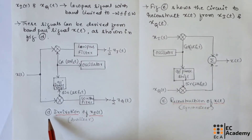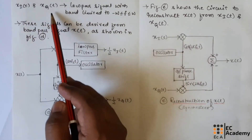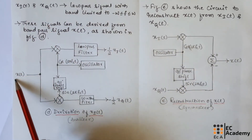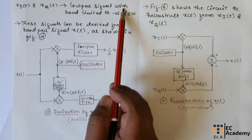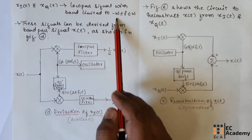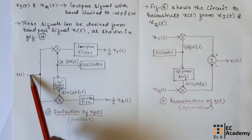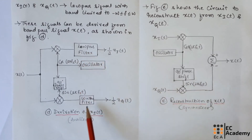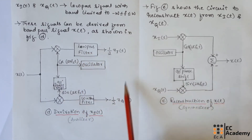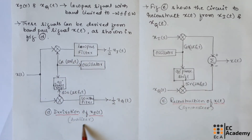Figure D shows how we can obtain the signals xI(t) and xQ(t) from x(t). Here xI(t) and xQ(t) are low pass signals with band limit minus omega to omega. Since x(t) is a high pass signal, if we pass x(t) through low pass filters, we will obtain xI(t) and xQ(t). This circuit is also known as an analyzer circuit.